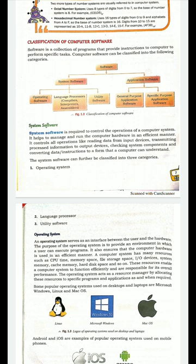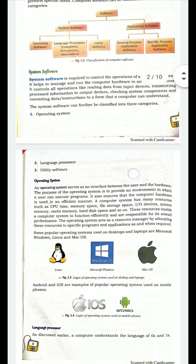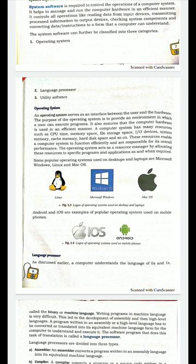The first example is the operating system. An operating system serves as an interface between the user and the hardware. It acts as a medium between the user — that is, us — and the hardware, which includes parts of the computer like the monitor, keyboard, and mouse.